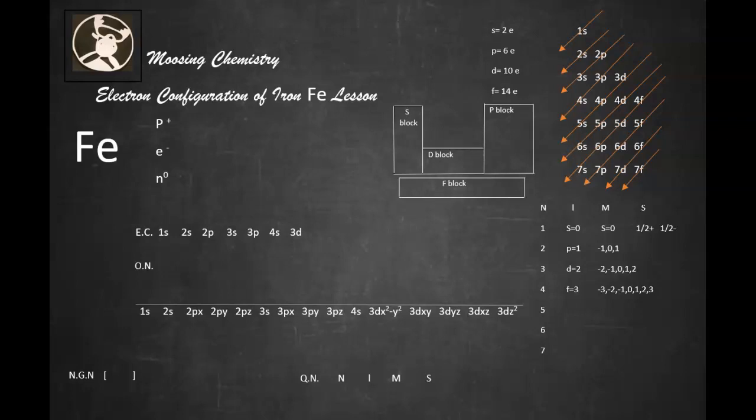Now, iron is the 26th element on the periodic table. So we're going to put 26 right here. And its atomic mass unit is going to be 56.